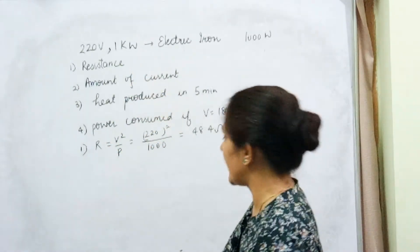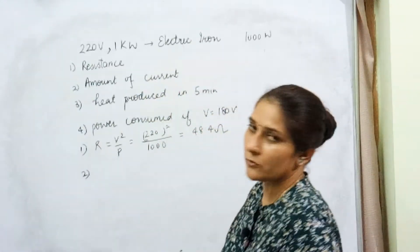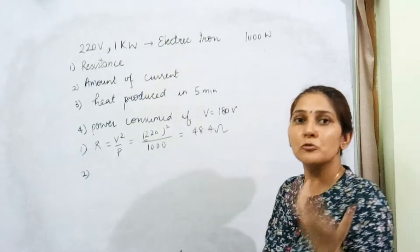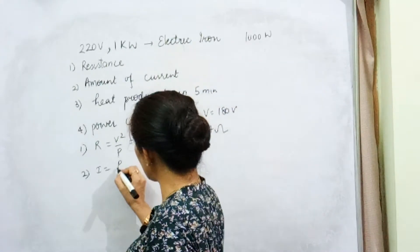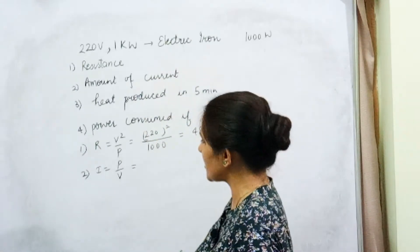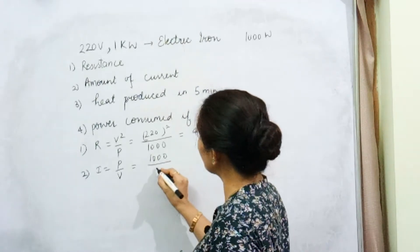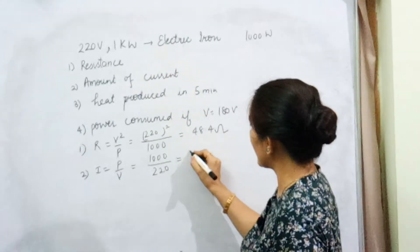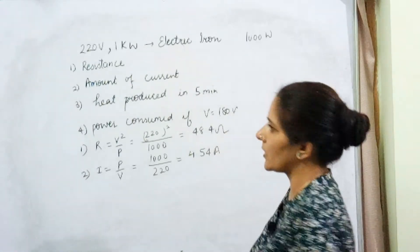R = 220² / 1000 = 48.4 ohm. That is the first thing — the resistance of the heating element is 48.4 ohm. Second, they are talking about the amount of current flowing through the heating element — that is, the safe amount of current. So I = P / V = 1000 / 220, which gives 4.54 ampere. This is the safe limit of the current.